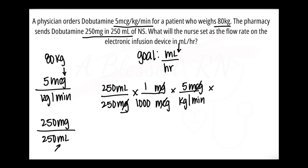Now we have kilograms and minutes remaining. We have a puzzle piece with kilograms in it, so we'll put that on top to cancel out the kilograms: 80 kilograms over 1 — it's by itself so I put it over 1 as a placeholder to show it's in the numerator. What's left is minutes on the bottom, but we need hours according to our goal.